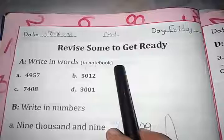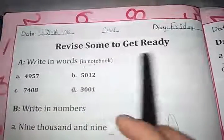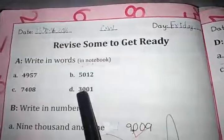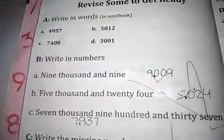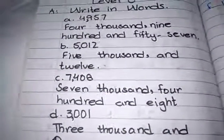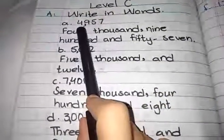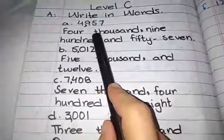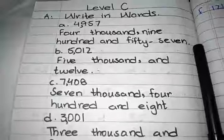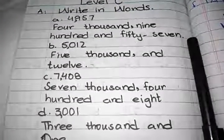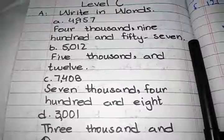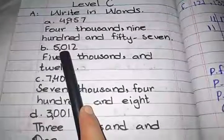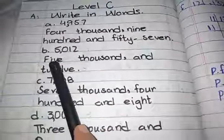Question number A: write in words in your notebook. In this question we have to write these numbers as number names. Number A is four thousand nine hundred and fifty-seven. Number B is five thousand and twelve — simply write five thousand and twelve.